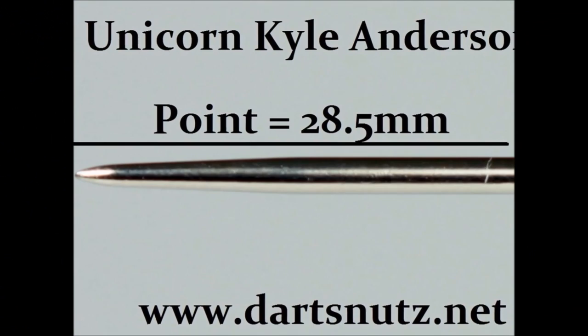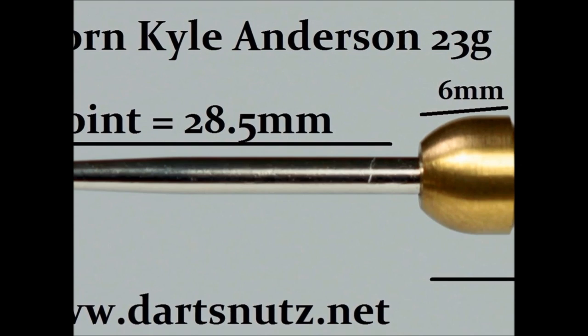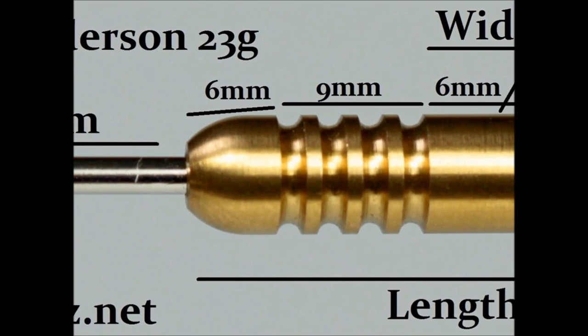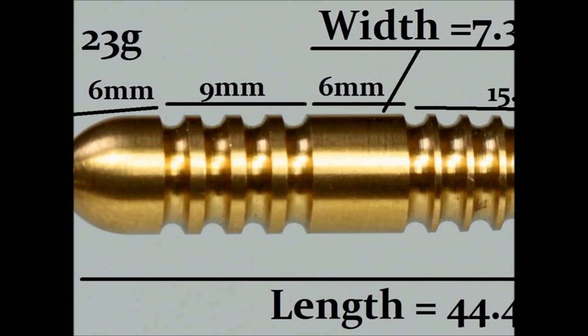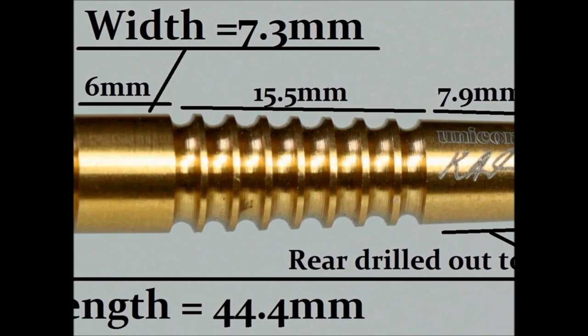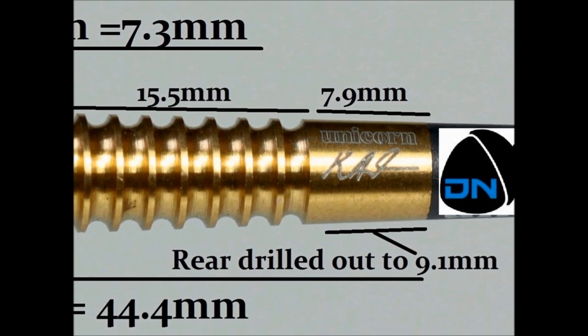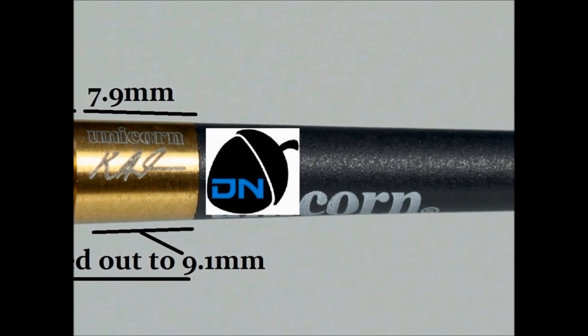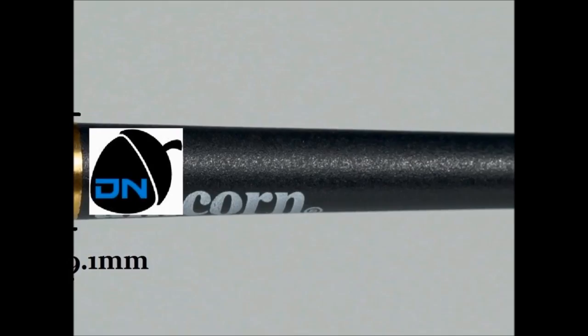Here's the detailed look at the Unicorn Kyle Anderson 23 gram darts. It's got a point of about 28.5 millimeters, there's quite a deep rounded bull nose to the barrel of about 6 millimeters width. Then the front section of the barrel has a fairly normal sized ring grip but very deep grooves in between each ring, and that's about 9 millimeters wide. Then there's a smooth band of around 6 millimeters, and then it goes into a very thin purist type grip but again with very wide grooves in between of about 15.5 millimeters. The rear section of the barrel has the Unicorn logo and Kyle Anderson's signature, that's 7.9 millimeters wide. Overall length is 44.4 millimeters and the width is 7.3 millimeters.